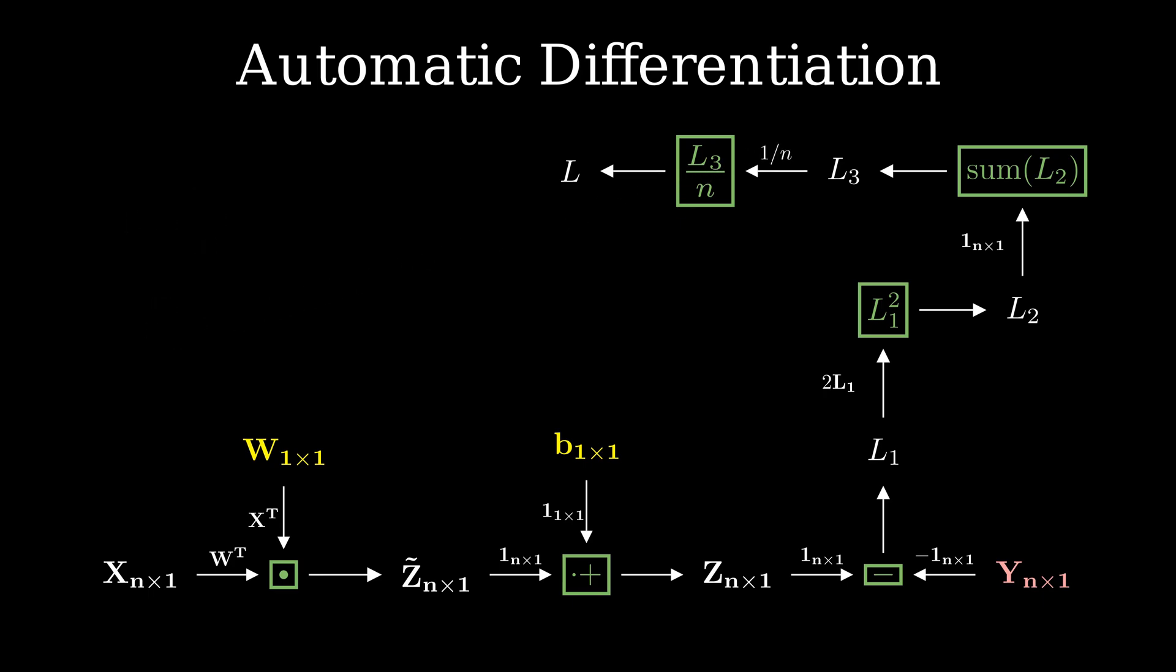95% of the work is done now. We have the computation graph and the local gradients. Getting the global derivative of cost function with respect to parameters w and b is just about moving through this graph backward and applying chain rule at each step. Let's start by getting the derivative of l with respect to l3. Then using chain rule, we can say that the derivative of l with respect to l2 is the product of global derivative of l with respect to l3 and the local derivative of l3 with respect to l2.